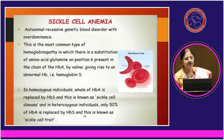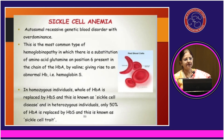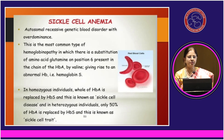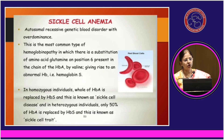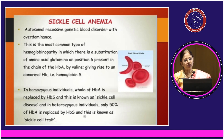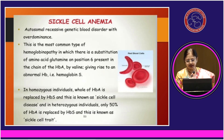Coming to sickle cell anemia — another autosomal recessive genetic blood disorder and the most common type of hemoglobinopathy. It involves substitution of the amino acid glutamine at position 6 by valine, giving rise to abnormal hemoglobin S, the sickle hemoglobin. In homozygous individuals, all HbA is replaced by hemoglobin S, called sickle cell disease; in heterozygous individuals, only 50% is replaced, called sickle cell trait.